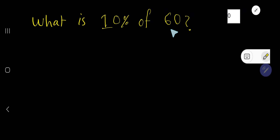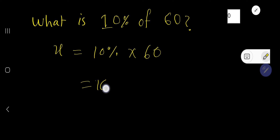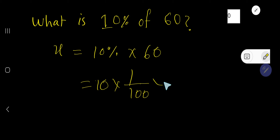What is 10% of 60? Let X equal 10% of 60. That means X equals 10% times 60. Rewrite it: 10% means 1 over 100, times 60. Just cancel the zeros.